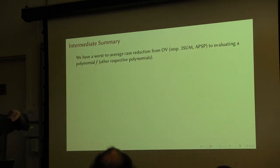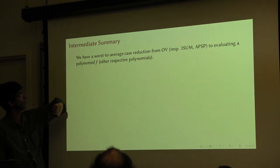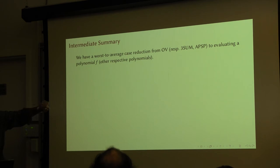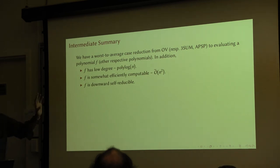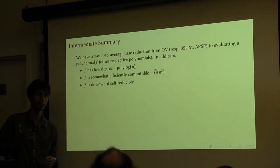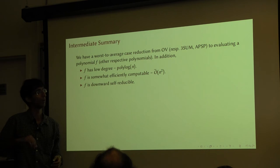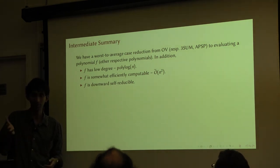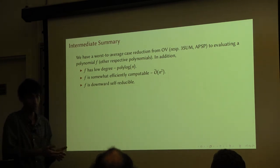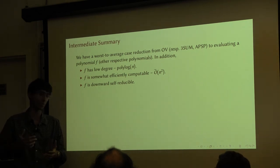To summarize: we have a worst-case to average-case reduction from orthogonal vectors to the polynomial f. You can do the same thing for the other problems mentioned earlier as well. In addition, the polynomial f you get has certain useful properties. Because if I did not have these properties, it's not that interesting — for any problem in PSPACE or EXP you can get an average-case reduction to some other problem, but the problem you reduce to doesn't have any interesting properties. Fortunately, our polynomial — because we were careful in constructing it — has the properties that it is low-degree, efficiently computable in n-squared time, and has its own self-reducibility properties.